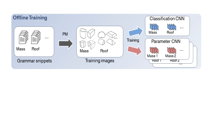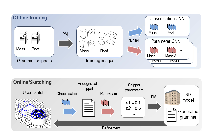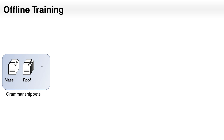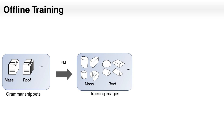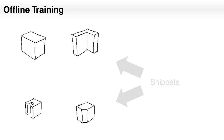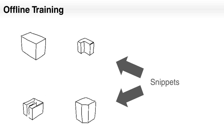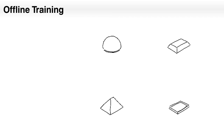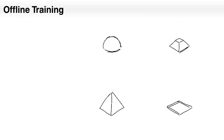Our method tries to hide all this complexity and manual tuning. The user can sketch a few strokes and obtain a complete 3D model. We first run an offline training, then at runtime the user sketches the building interactively. Instead of creating training examples manually, we use our procedural engine to generate images using a custom renderer. For each grammar snippet, we create hundreds of samples varying their parameters.